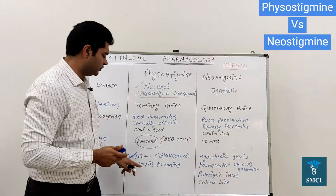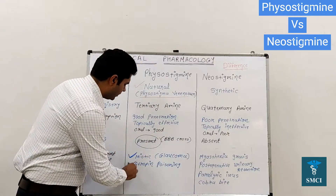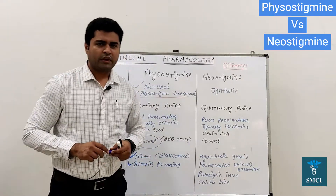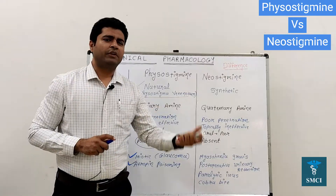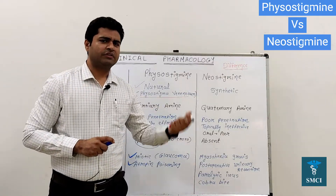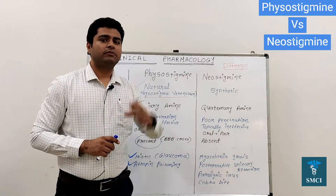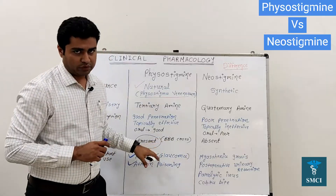What is the other use of physostigmine? We also use it in atropine poisoning. You might know about belladonna poisoning or Datura poisoning — to counter the action of atropine, physostigmine is used.